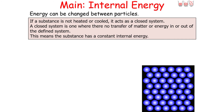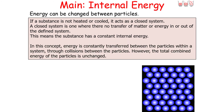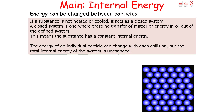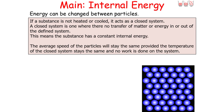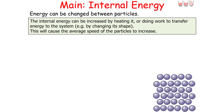This leads to a fundamental law: the change in internal energy of an object is the total energy transfer due to work done on the object and heating — this is the first law of thermodynamics. If a substance is not heated or cooled, it acts as a closed system, where there's no transfer of matter or energy in or out, meaning the substance has constant internal energy. Energy is constantly transferred between particles through collisions, but the total combined energy remains unchanged. The internal energy can be increased by heating or by doing work on the system, causing average particle speed to increase.